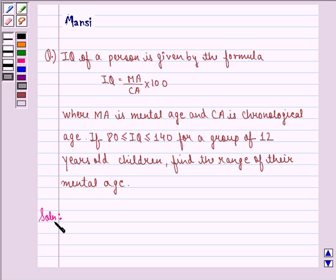We see that IQ of a person is given by the formula IQ equals MA divided by CA times 100, where MA is the mental age and CA is the chronological age.